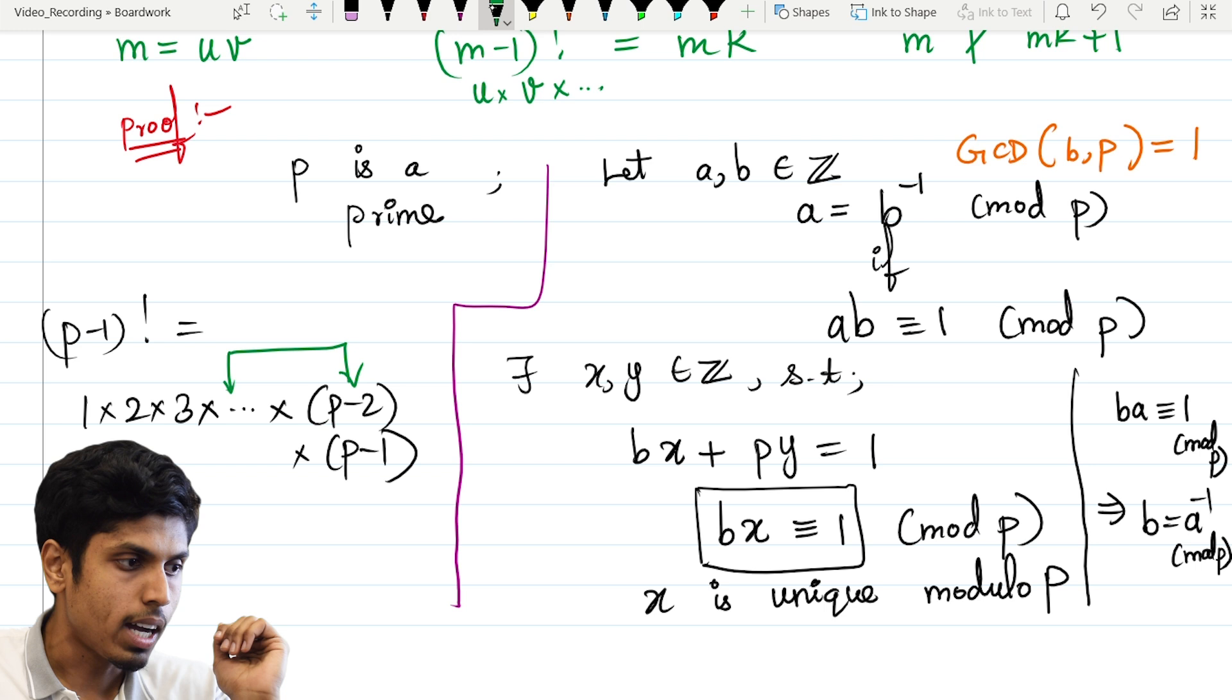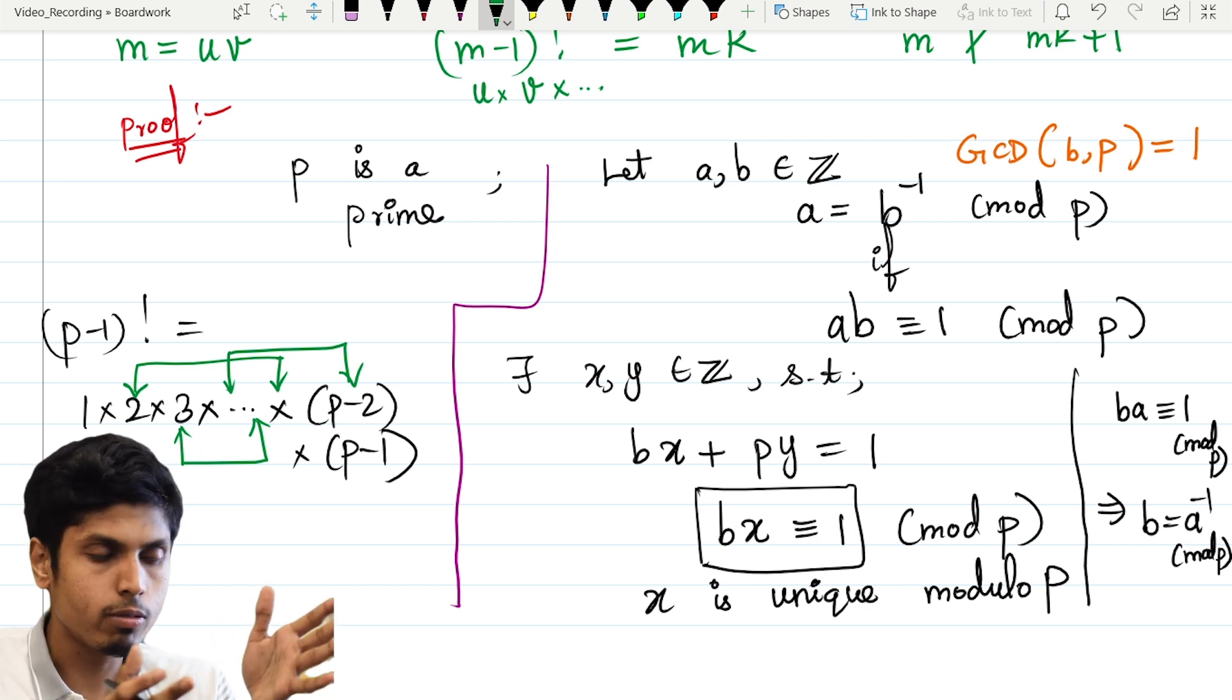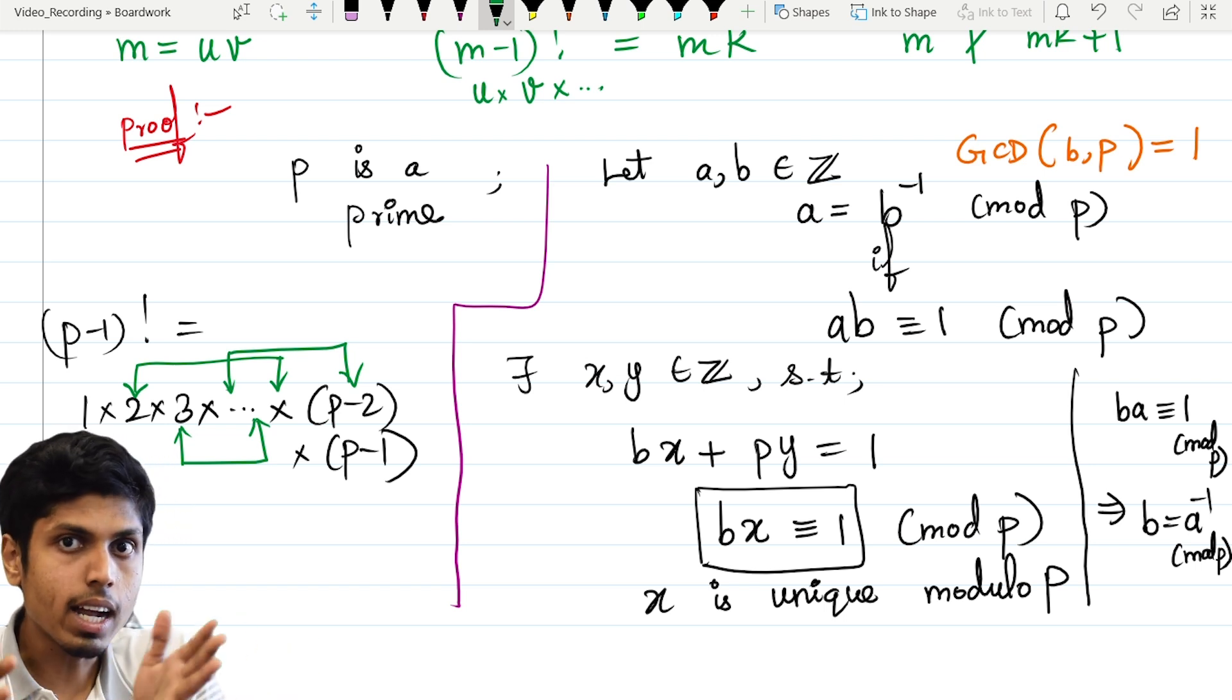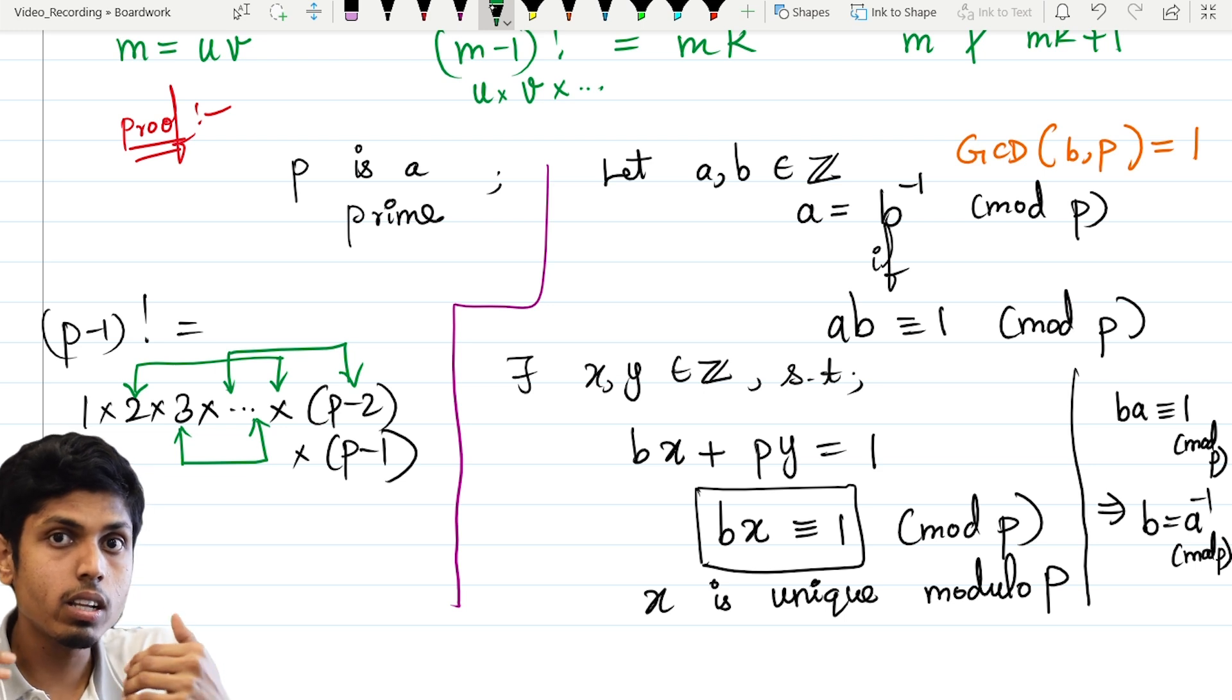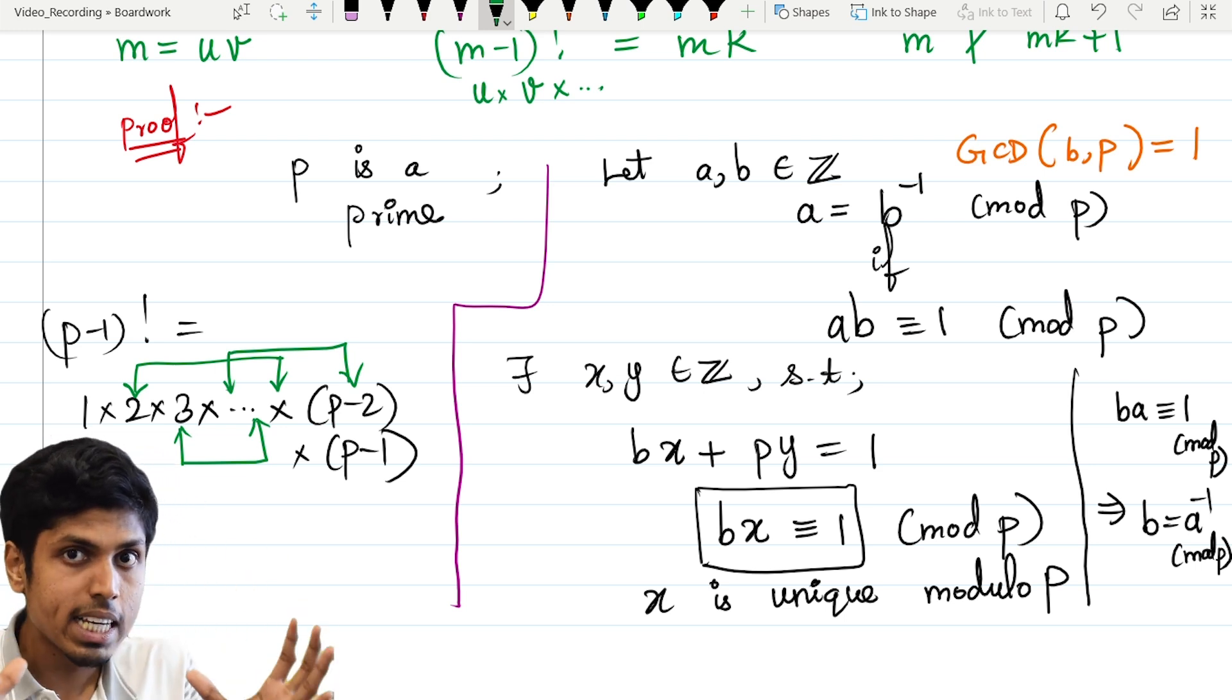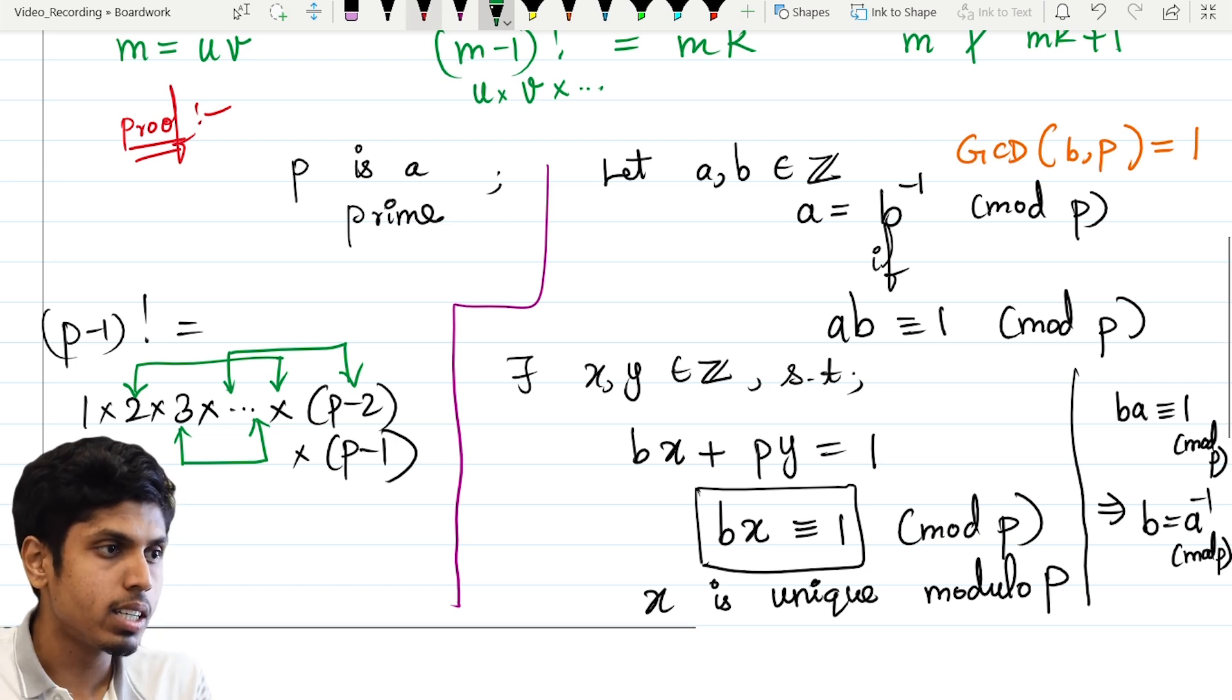Right? That's the definition of inverse. And similarly, we can pair up 3 with some other number, 2 with some other number. We did not prove that this is the inverse for each number. We are just using the fact that there exists some number, and that is unique modulo p. There are no other numbers. So we can pair them up like this. And also that inverse of inverse is the same number. So if you take 2 inverse, then the inverse of 2 inverse is again 2. So we can easily pair up all the numbers. But we will have a problem when inverse is that number itself.